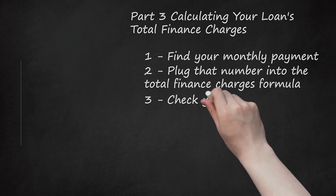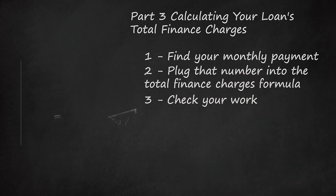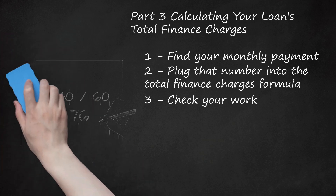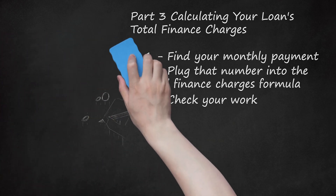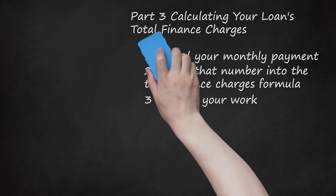Step 3: Check your work. To be sure you calculated your total correctly, divide that number by the total number of payments — 60 in this case. $4,540 ÷ 60 equals $76. If the result matches your monthly finance charges calculated earlier, then you have the correct number for total finance charges.